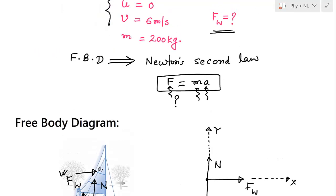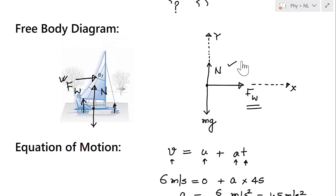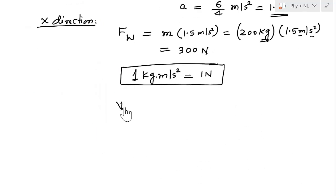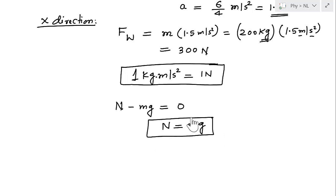In the y-direction, the forces are N and mg, so: N − mg = 0, which gives N = mg. In this video we learned how to apply Newton's second law illustrated with a constant force scenario, using F = ma to calculate the wind force. I hope you enjoyed this video — please share with your friends, and I'll see you in the next one.